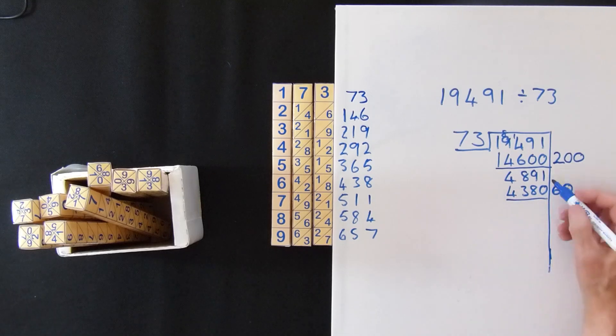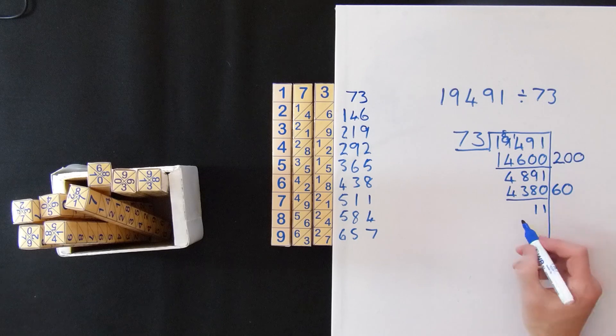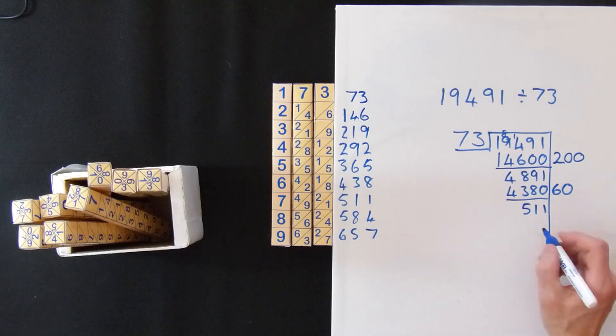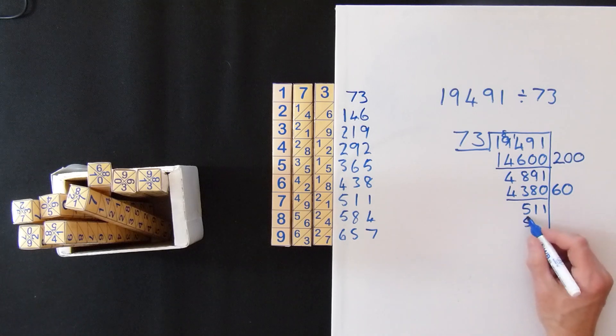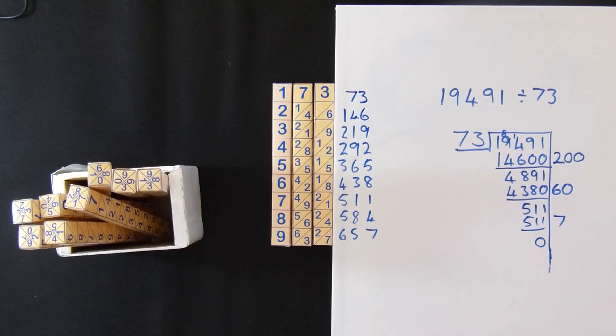We now do a wee subtraction. We get 1. 8 from 9 is 1. 3 from 8 is 5. And now we look down and find the one less than 511. Oh! And we see that 511 is exactly 7. So we put the 511 there. That gives you the 7. Leaving us with nothing. So our answer is 267.